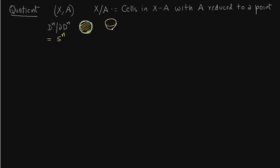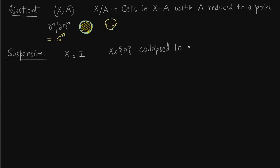So again, you take the boundary and collapse it to a point — that is precisely how X modulo A is used. What is suspension? You take a cell complex and take its product with the interval from 0 to 1, collapse X times 0 to a point, and also collapse X times 1 to a point. This is denoted SX, or Sigma X — this is the suspension of X.